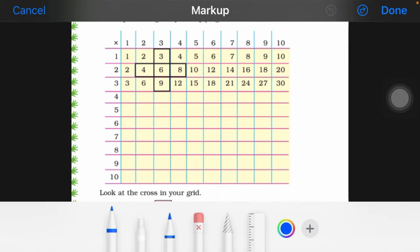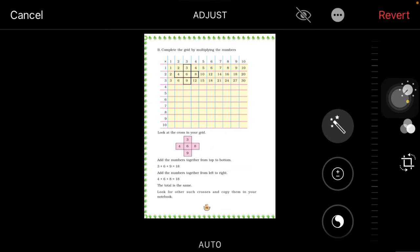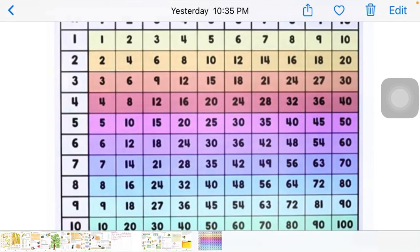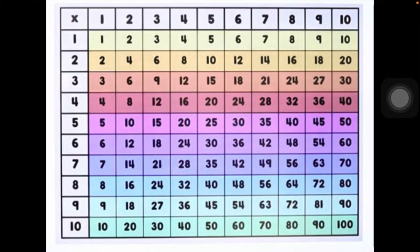Then what do we do here? Just like I already have this filled. Now what do we do here? Look at the cross in your grid. Now what do we do here? Let's select numbers.